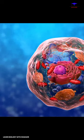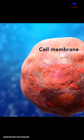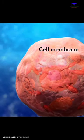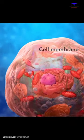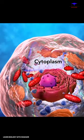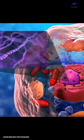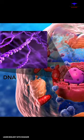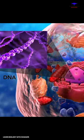All cells have a cell membrane, which separates the inside of the cell from its environment. Cytoplasm, which is a jelly-like fluid, and DNA, which is the cell's genetic material.